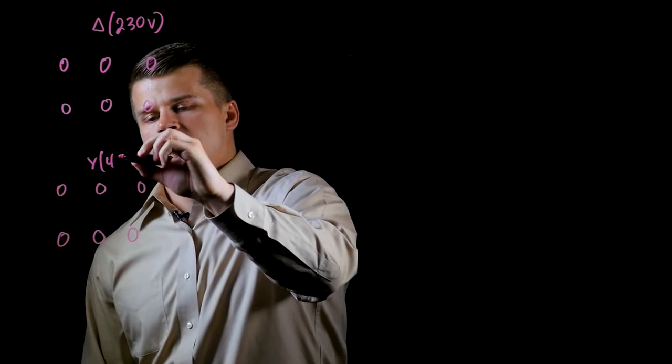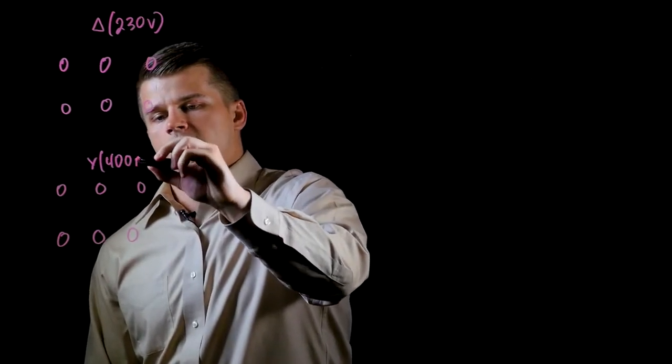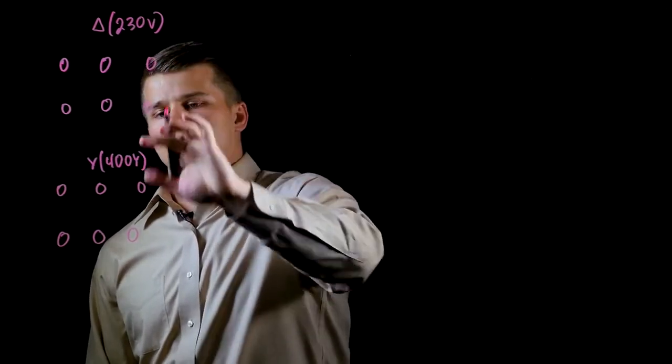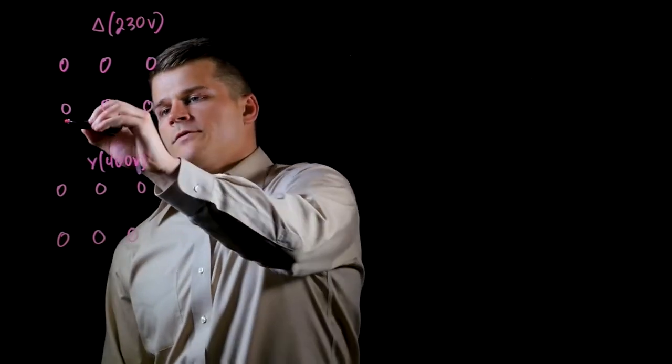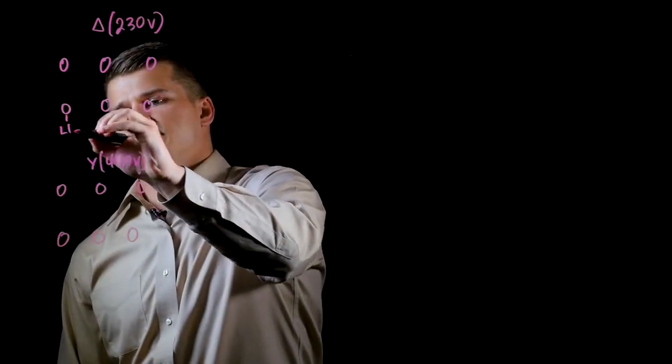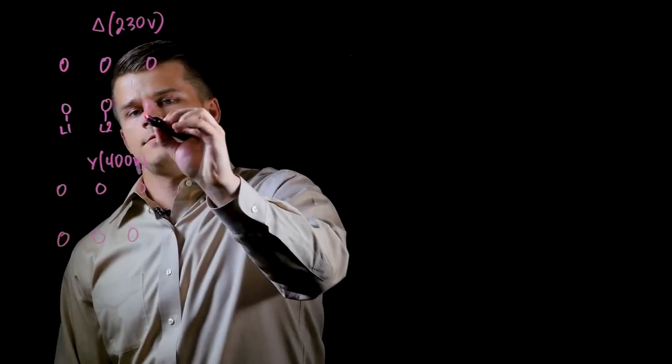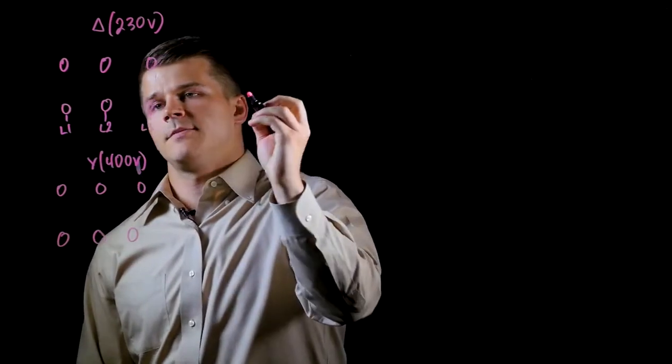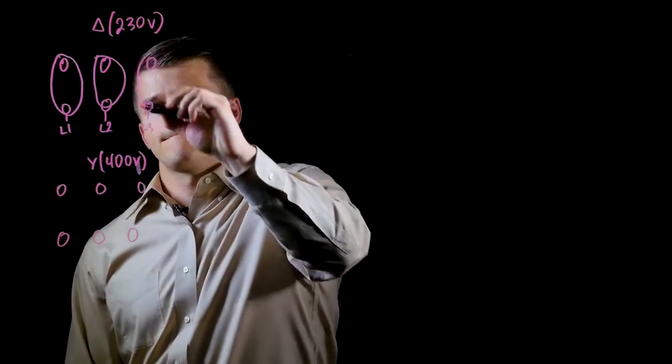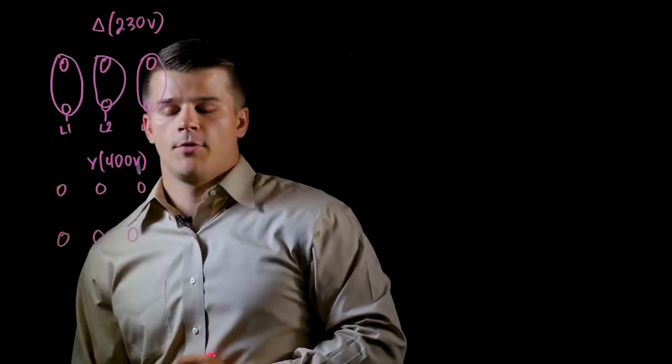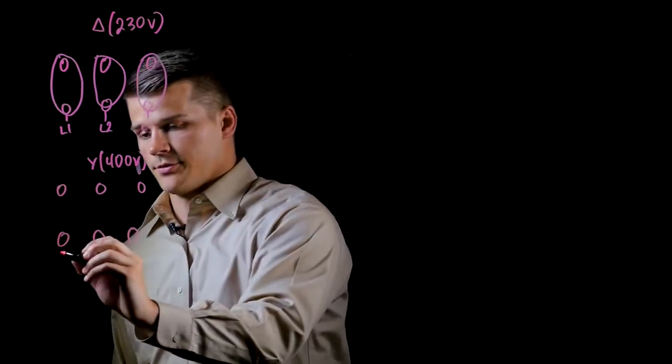The Delta Y allows for two different motor voltage inputs: 230 volts or 400 volts. With the Delta configuration, you have your L1, L2, and L3 coming in, and you would jump across here, here, and here. That's your Delta motor configuration for a 230 volt input.